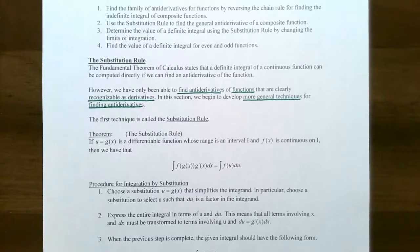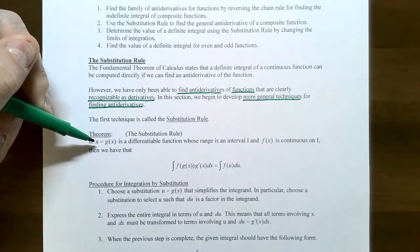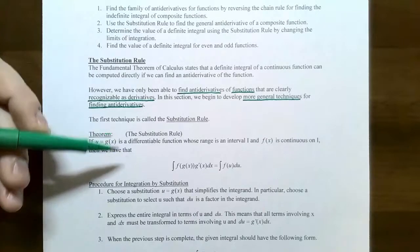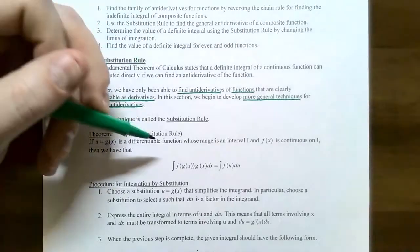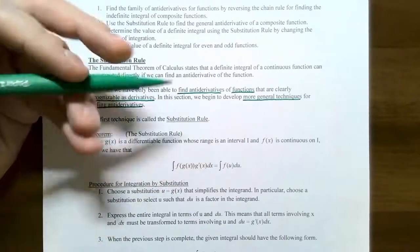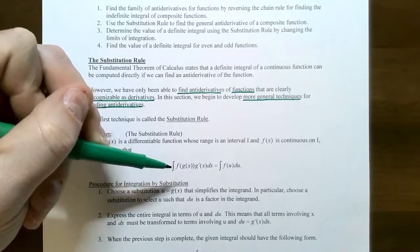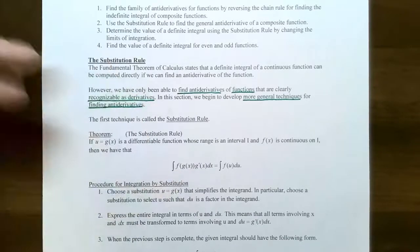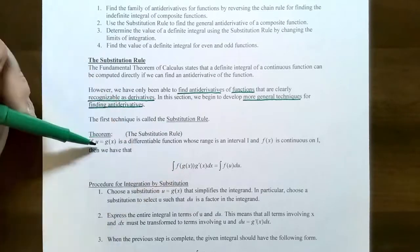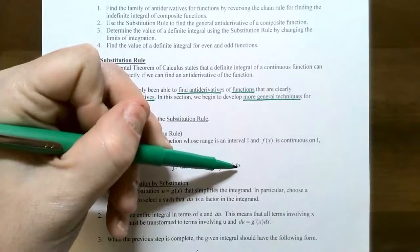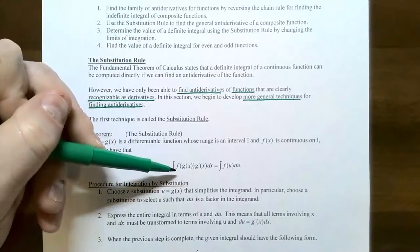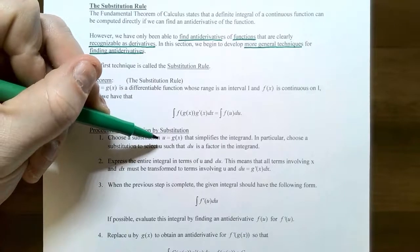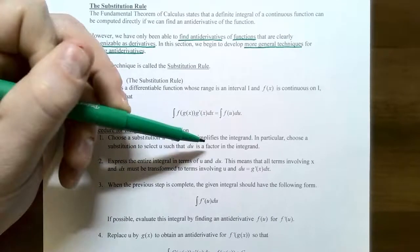Here's how the substitution rule works — it's going to look very similar to the chain rule. We're going to let u denote the inside function, which is g(x). It is a differentiable function, and its range is an interval I where f(x) is continuous. So an indefinite integral of f (the outside function) composed with g(x) (the inside function), where the derivative of the inside function is part of the integrand, can be rewritten: let u = g(x) and g′(x)dx becomes du. Choose u so that it will simplify the integrand.